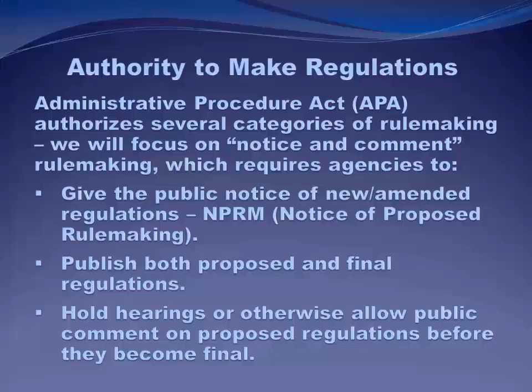The APA authorizes several categories of rulemaking. We'll focus on notice-and-comment rulemaking, which requires agencies to give the public notice when they're starting to make a new regulation or amend an old one — that's called an NPRM, Notice of Proposed Rulemaking, published in the Federal Register. This procedure requires agencies to publish both proposed and final regulations so everybody can review them. It requires agencies to hold hearings or otherwise allow public comment before a proposed regulation becomes final.